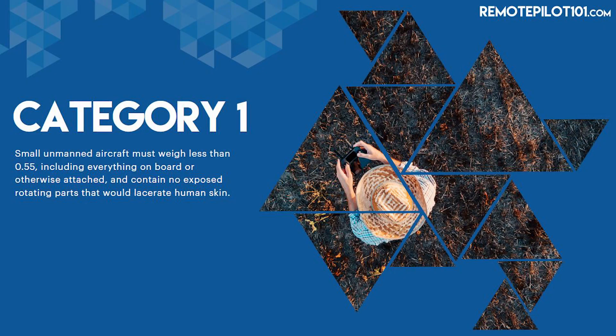Category number one: the small unmanned aircraft must weigh less than 0.55 pounds, including everything on board or otherwise attached, and contain no exposed rotating parts that could lacerate human skin. That sounds like a small drone with ducted engines — because you've got to think, we're flying over people, this thing falls out of the sky, is it going to hurt somebody? There are moving parts — can they lacerate the skin? So they'd have ducted engines, and that would be considered a Category 1 drone.